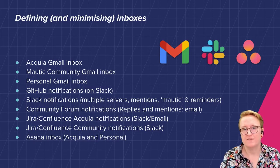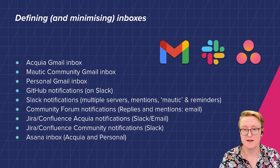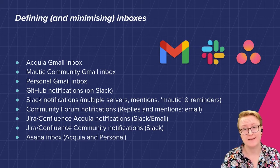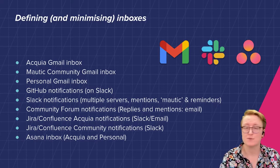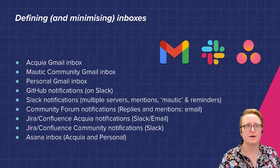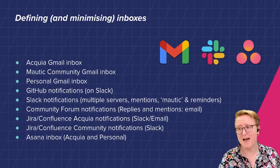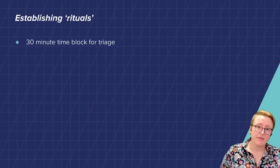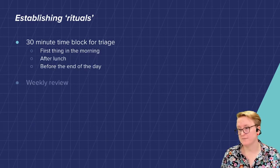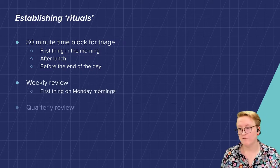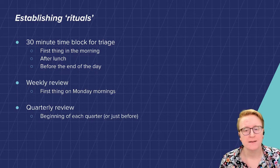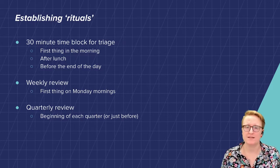Once I've defined those inboxes and minimized how many I have to check, the next thing was about setting rituals for checking them and making sure I do regularly come back to them. As soon as I get out of these work rituals, it all just goes to pot and I end up doing whatever I feel drawn to do rather than the things that are important. I can't overemphasize the importance of having those rituals. For me, I block out 30 minutes in the morning, 30 minutes after lunch, and 30 minutes before I leave for the day to go through my tasks and my inboxes. I do a weekly review on a Monday to look at what happened last week, what's coming up this week, what do I really need to get done, and what's high priority.